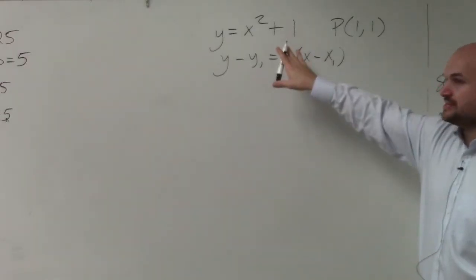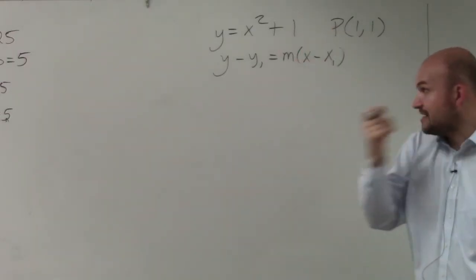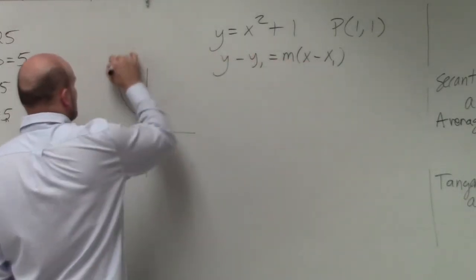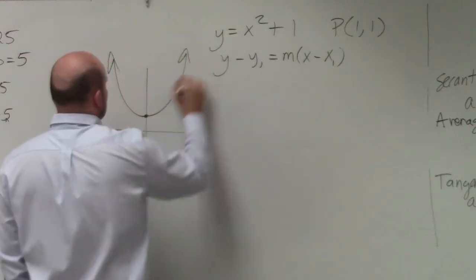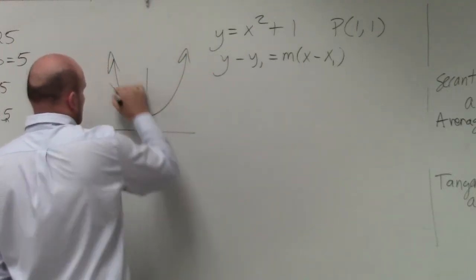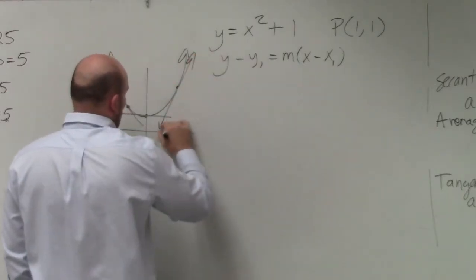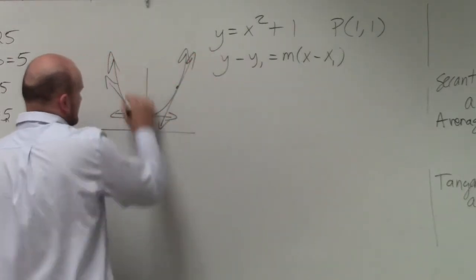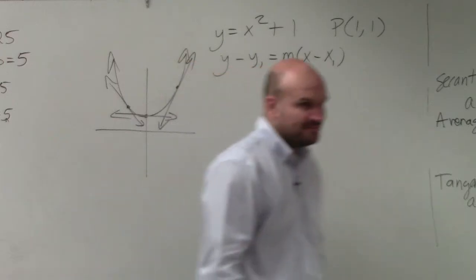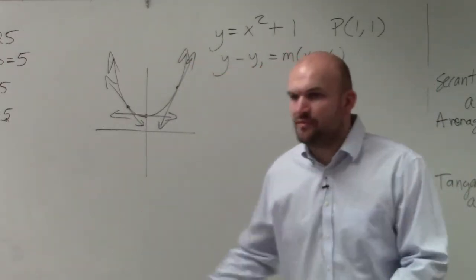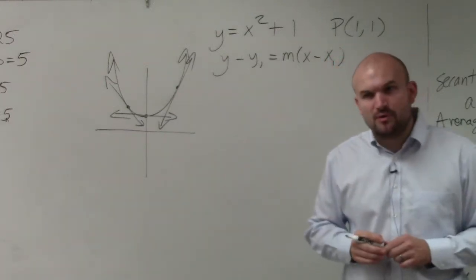So the first thing is, we don't know what the slope is of this graph. And if we actually just look at the graph, as we talked about, the slope is always changing. So we can't say it's like a line where the slope is 5 or the slope is 1/3. The slope is actually always changing depending on the point.